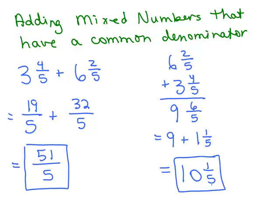51 fifths is the same thing as 10 and 1 fifth. Both of these are reduced — one's written as a mixed number, one's written as an improper fraction. So if you would have done it either of these ways, you would get a correct answer. If you were directed to write your answer as a mixed number, you would take 51 fifths and divide to get 10 and 1 fifth. That's how we add mixed numbers that have a common denominator.